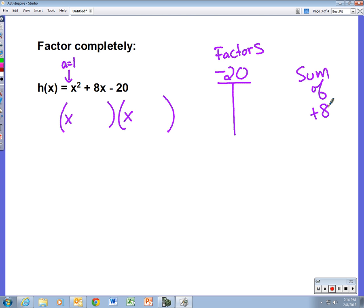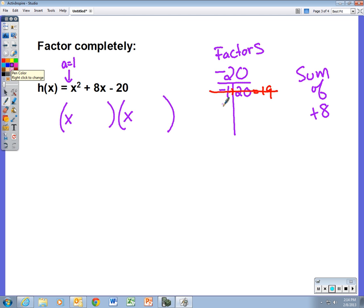Remember, factors are what you multiply. Factors of negative 20: I can take negative 1 and 20, but if I add those together, I will get 19. Well, that's not it. Again, I want positive 8.